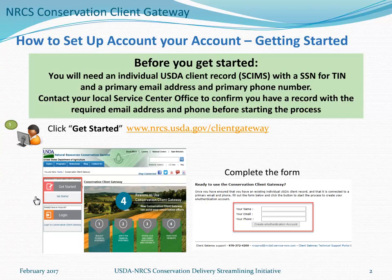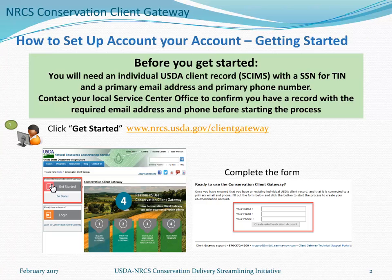Once you've confirmed that you have a USDA client record with all the required information, go to the Conservation Client Gateway homepage at www.nrcs.usda.gov/ClientGateway and click the Get Started button. You'll be taken to a page that provides information on the process. At the bottom of that page is a form where you will enter your name, email, and phone number, then click the Create eAuthentication Account button.